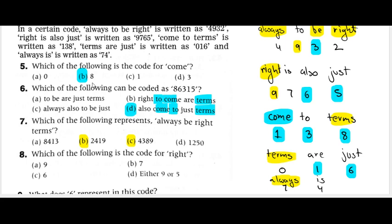Always gets number 4. Both B and C have 4 and 9. Now for 'always be right terms' — B is the answer; B is the correct one according to the book. Always right is done. Now for 'terms' — terms appears here and terms appears here. The common between both is 'one'. So 2, 4, 1, 9 will be the correct one.